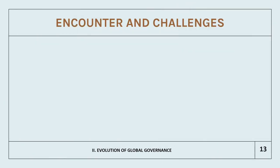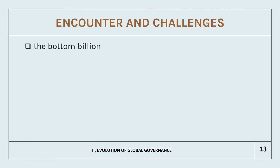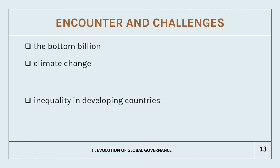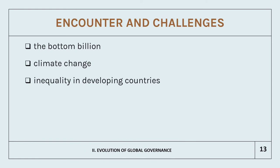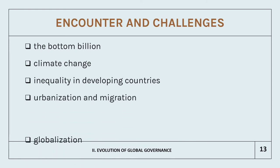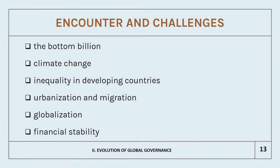Some of the key aims that global governance wishes to address for all countries include: the bottom billion, climate change, inequality in developing countries, urbanization and migration, globalization, and financial stability.